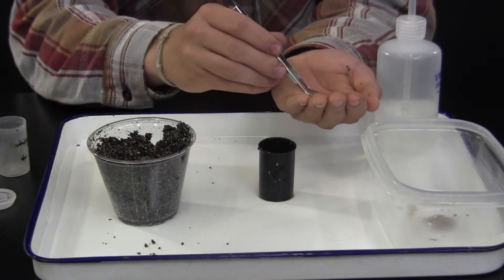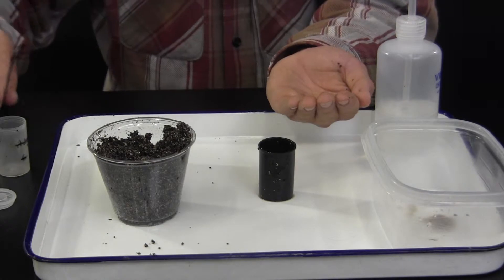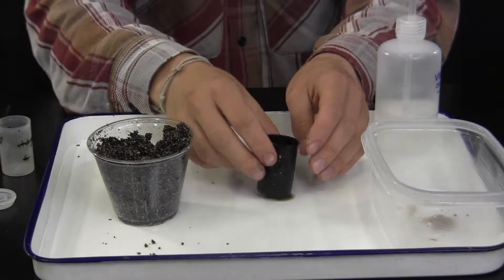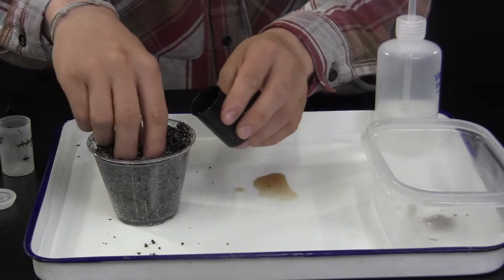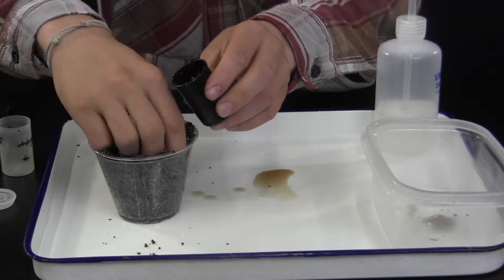This fertilizer will provide sufficient nutrients for the Brassica Rapa to grow to maturity. After the fertilizer is in place, fill the remainder of the canister with potting mix.